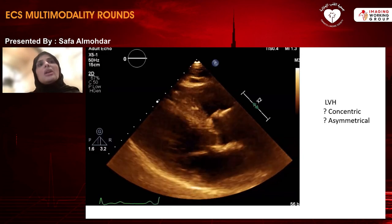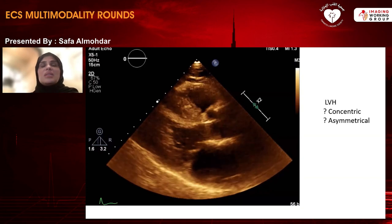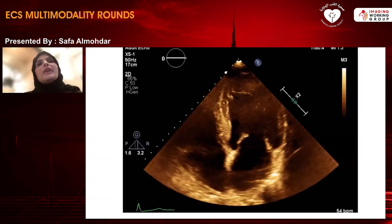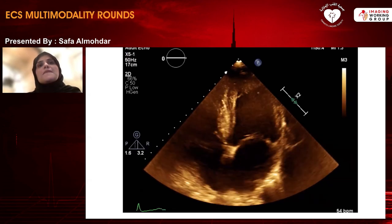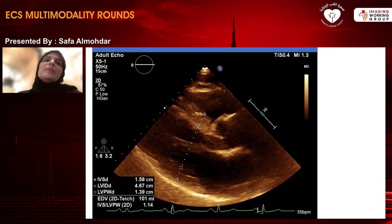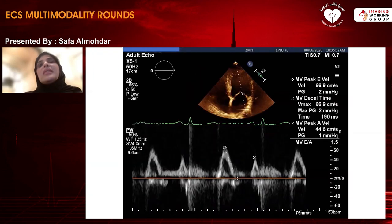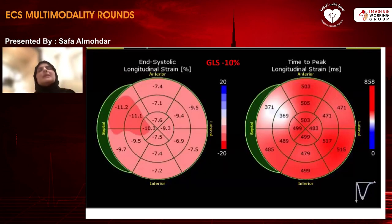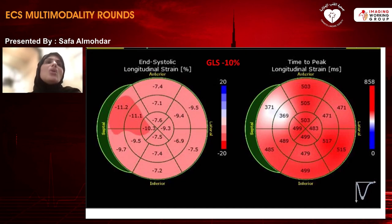His echocardiogram was reviewed with two questions in mind: does he have LVH, and is it concentric or asymmetrical? Views included parasternal long axis, short axis, four-chamber, and two-chamber. On 2D measurement, the septum was 16 mm whereas the posterior wall was 14 mm. E to A ratio was 1.5, E to E prime ratio elevated at the septum at 23 and lateral wall at 19. Global longitudinal strain showed significant reduction of all segments with an overall GLS of 10%.